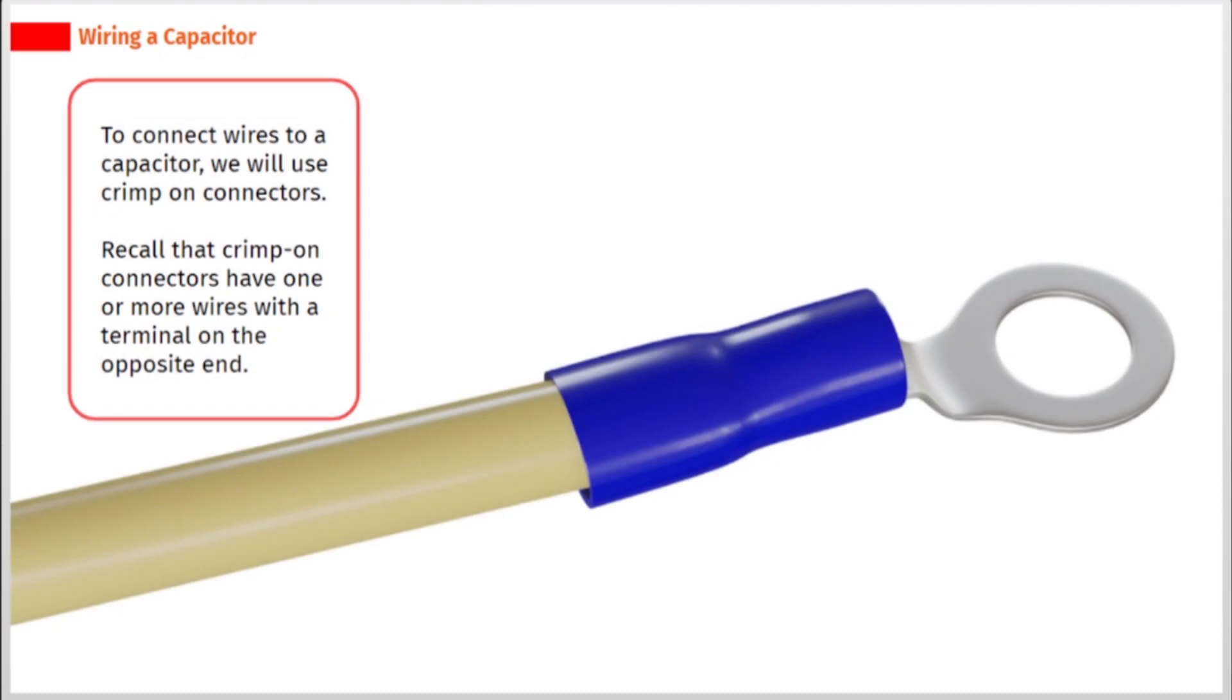To connect wires to a capacitor, we will use crimp-on connectors. Recall that crimp-on connectors have one or more wires with a terminal on the opposite end.